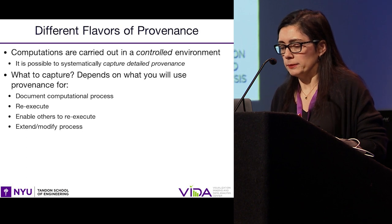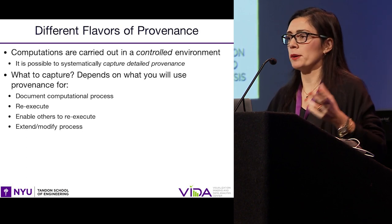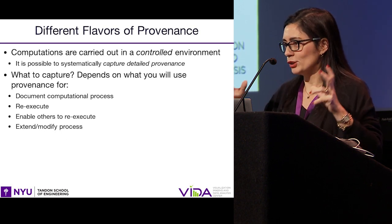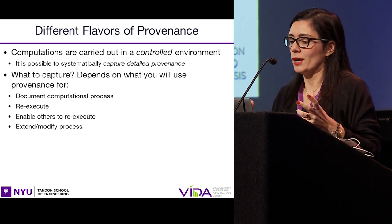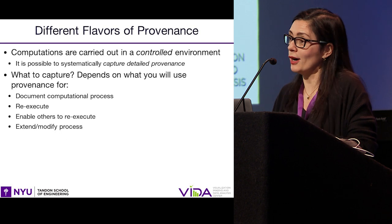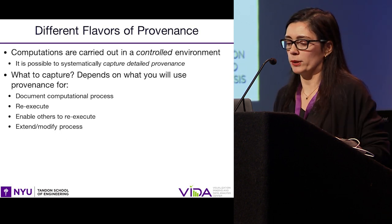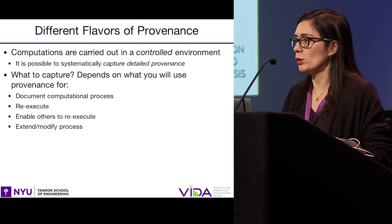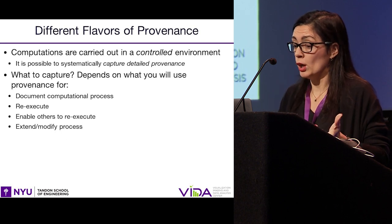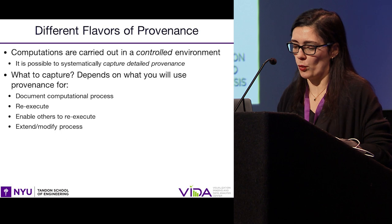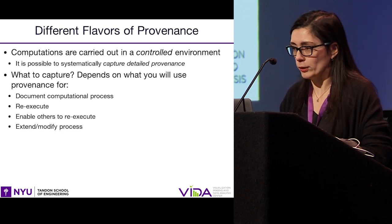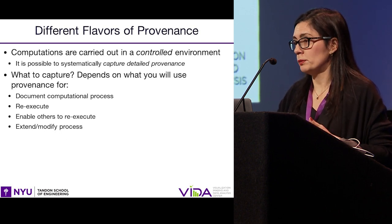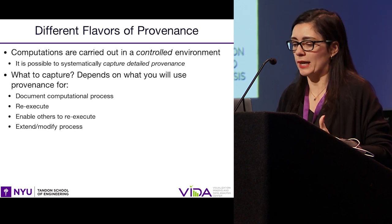When you look at provenance in science in general — like if you have biological experiments or social experiments — it can be really hard to replicate a particular study. But when we have computations, they are actually carried out in a controlled environment. So in theory, it's actually possible and should not be too hard to systematically capture what happens in a computational environment. But then the question you have to ask is: what should you capture? And the answer depends on what you use the provenance for. In some cases, you just want to document the computational process. In other instances, you want to be able to rerun what you ran before, or even share that so others can run it in different environments. And of course, you may want to be able to extend, modify, and assess the reliability of the results.